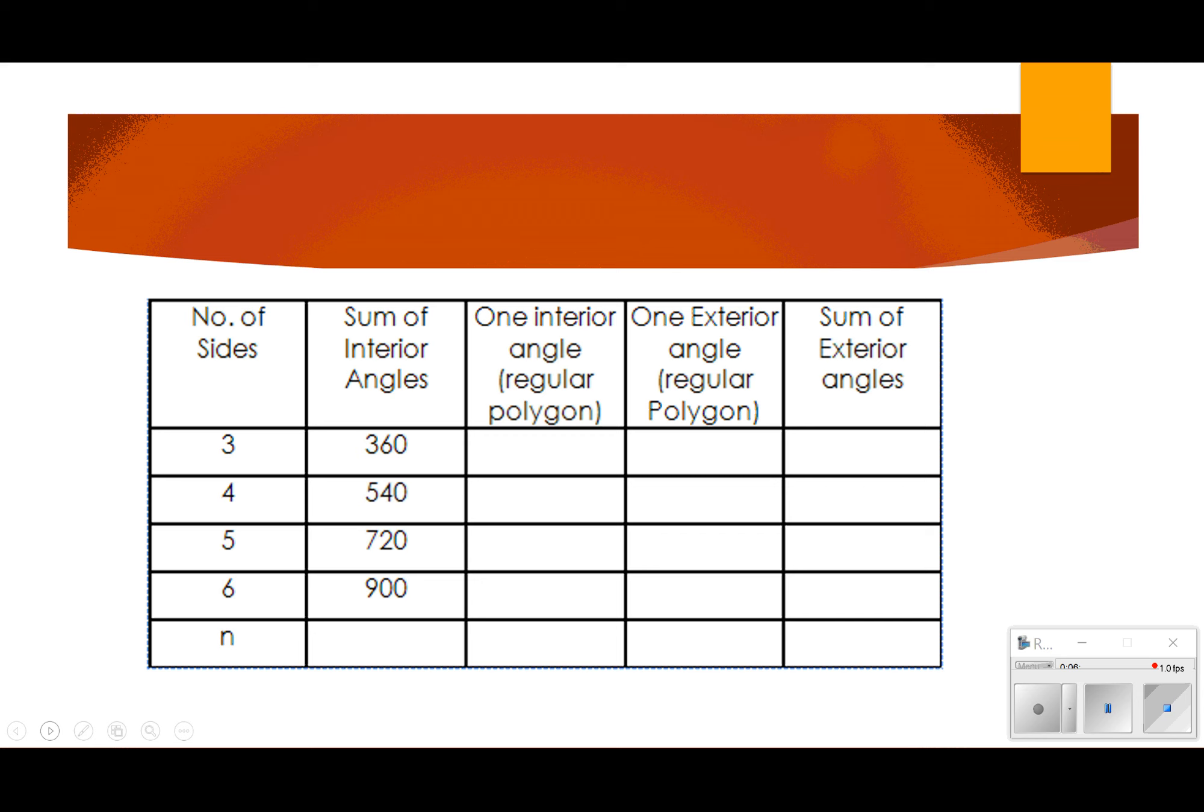So, I knew there was a typo somewhere on here, and I found it. All right. So, 180, 360, 540, 720. I don't know if your chart is messed up, but just take a look. So, now it makes sense that if I have n minus 2, 180 to find the sum of all of those angles, one angle inside of a regular polygon is just going to be that sum divided by the number of sides.